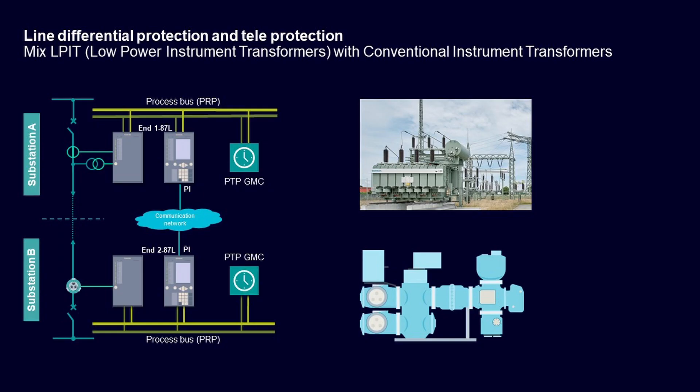Line differential protection requires sharing information between two different stations. SIPROTEC 5 7 SL 87 supports the use of conventional instrument transformers on one end, which can be connected to a merging unit that supports IEC 61850-9-2 sample measurement values. On the other end, low power instrument transformers can be connected to the merging unit supporting IEC 61850-9-2 sample measurement values. Based on that configuration, the line differential protection 87L can be executed in a secure and stable way.